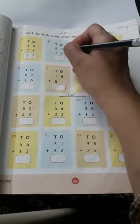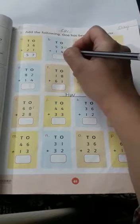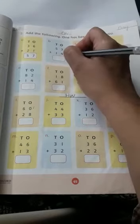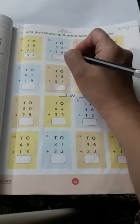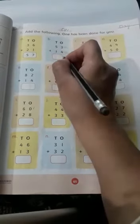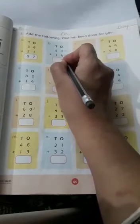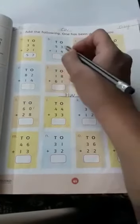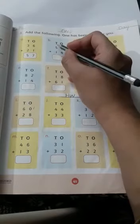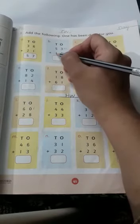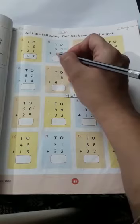Draw three lines: one, two, three. Then four lines: one, two, three, four. Now add all the lines: one, two, three, four, five, six, seven. Your answer is seven. Write it under ones. Next, in tens we have five and one. Five plus one equals six. Your answer is sixty-seven.